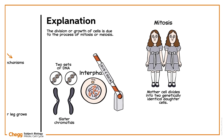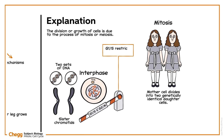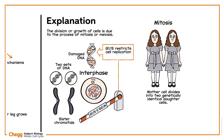During this, the cell faces two regulatory checkpoints. G1S restricts DNA replication when damaged DNA is detected, whereas G2M restricts cell division when damaged or unreplicated DNA is detected.